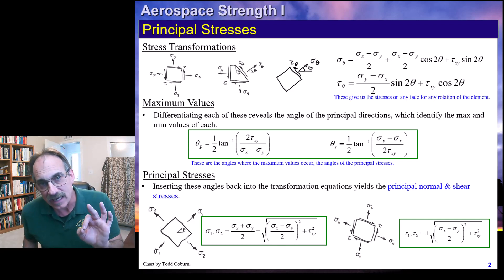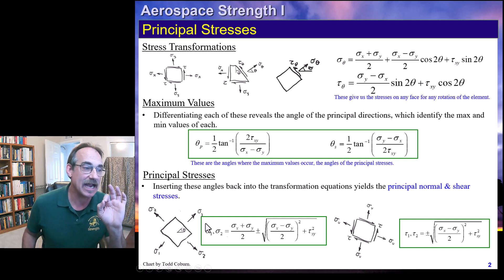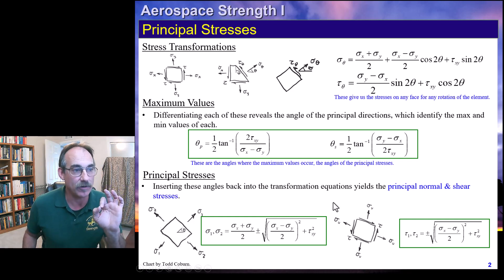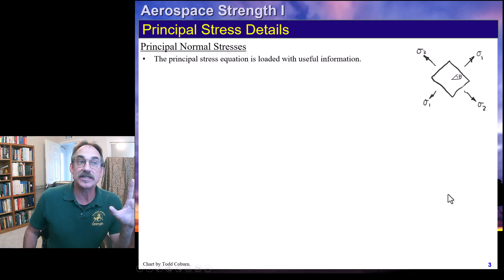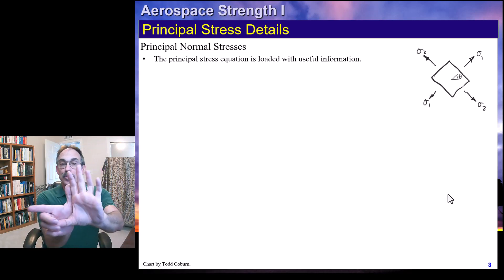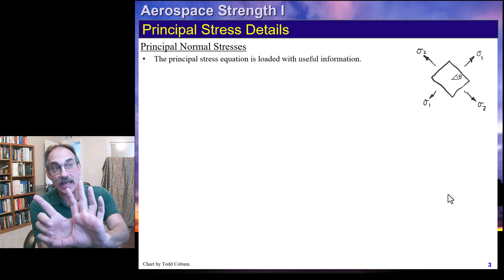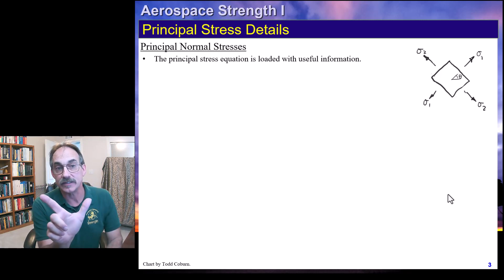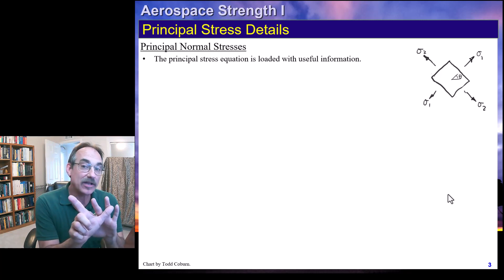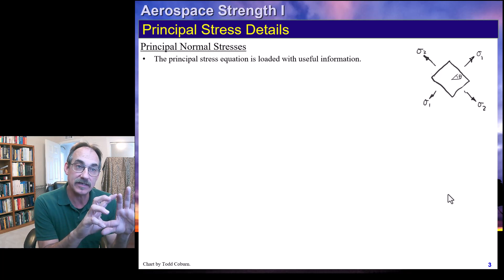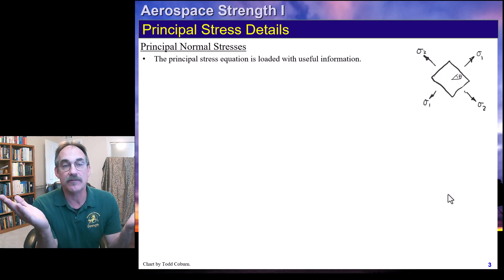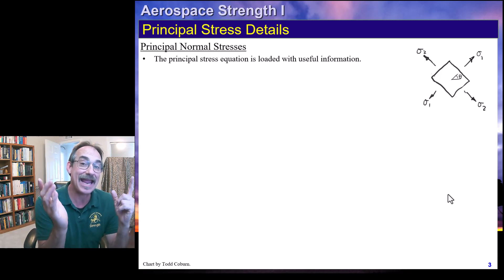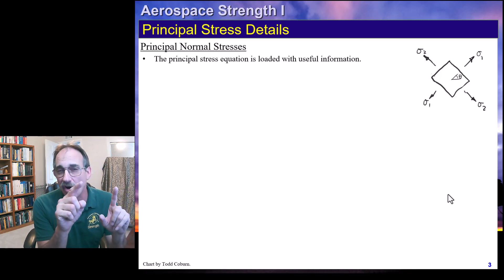These are the principal stress equations. Once we rotate our element to theta p, we now have our two normal principal stresses. Whenever we find the angle of the principal stresses and orient the element in the principal stress direction, we're going to find sigma 1 — which could have a value or be zero — sigma 2, which could also have a value or be zero. And we're going to find that our shear stresses are always zero on the element for that orientation.